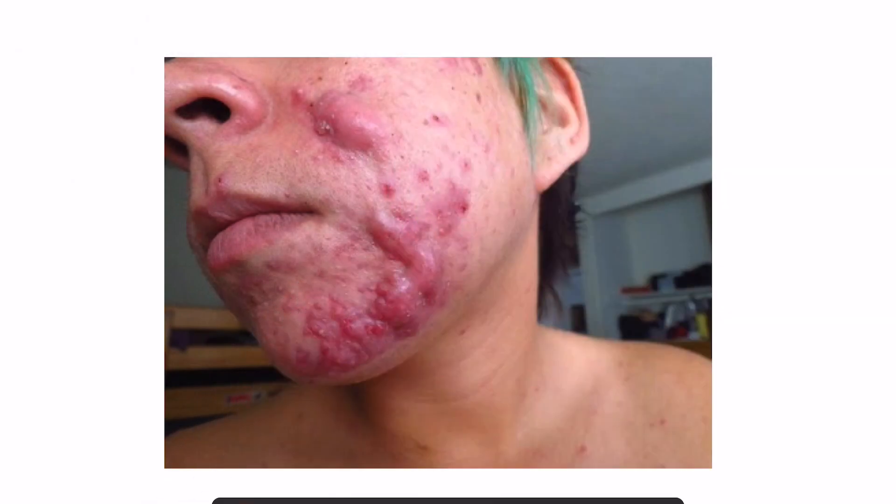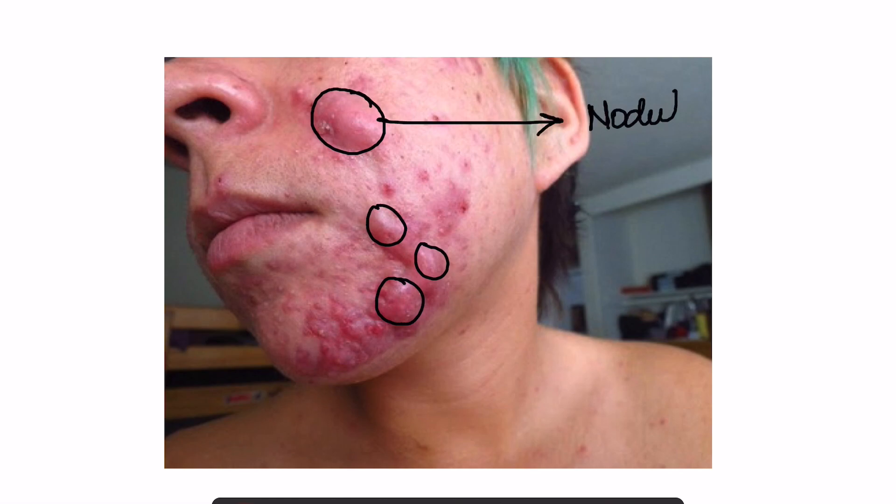Hello students, welcome back. Yesterday I showed you one image — if you missed that question, I will give you the link in the eye button above so you can see that video. I asked you to identify the condition being shown in the image, and the majority of you gave the correct answer: acne. Multiple nodules and cysts are being shown here, so this is nodulocystic acne.